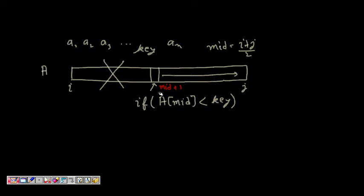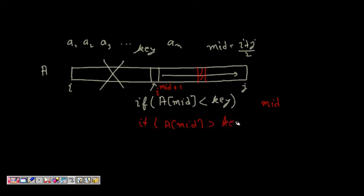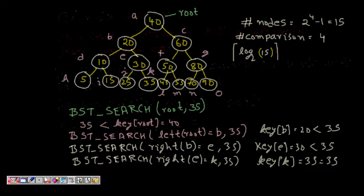This becomes our new i, and again we find mid = (i + j) / 2. If a[mid] is greater than the key, it means the key will be found in the left part. So every time we are discarding half of the numbers — this is binary search, and recursively we have code for it.